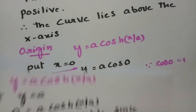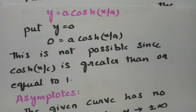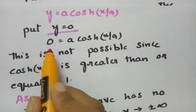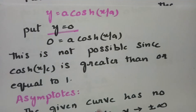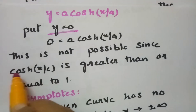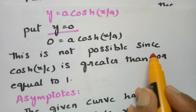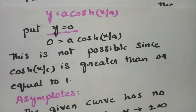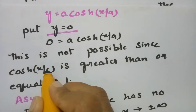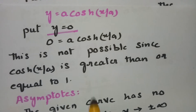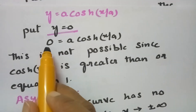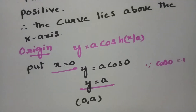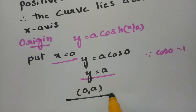In the same equation, if we put y = 0, then 0 = a·cosh(x/a). This is not possible since cosh(x/a) is always greater than or equal to 1, and thus never equals 0. Therefore, we have only a single point, (0, a).